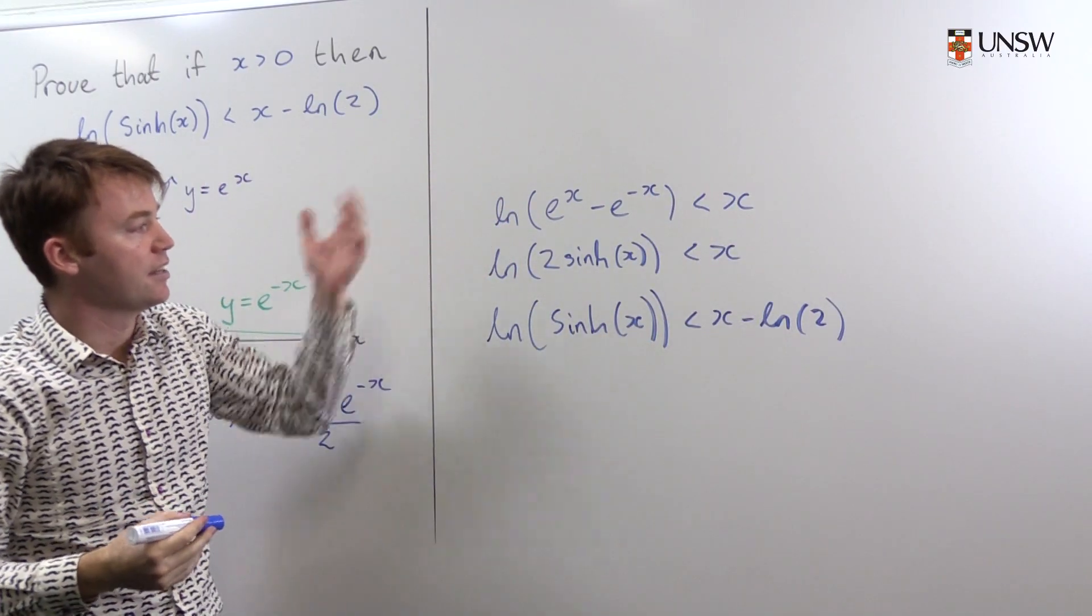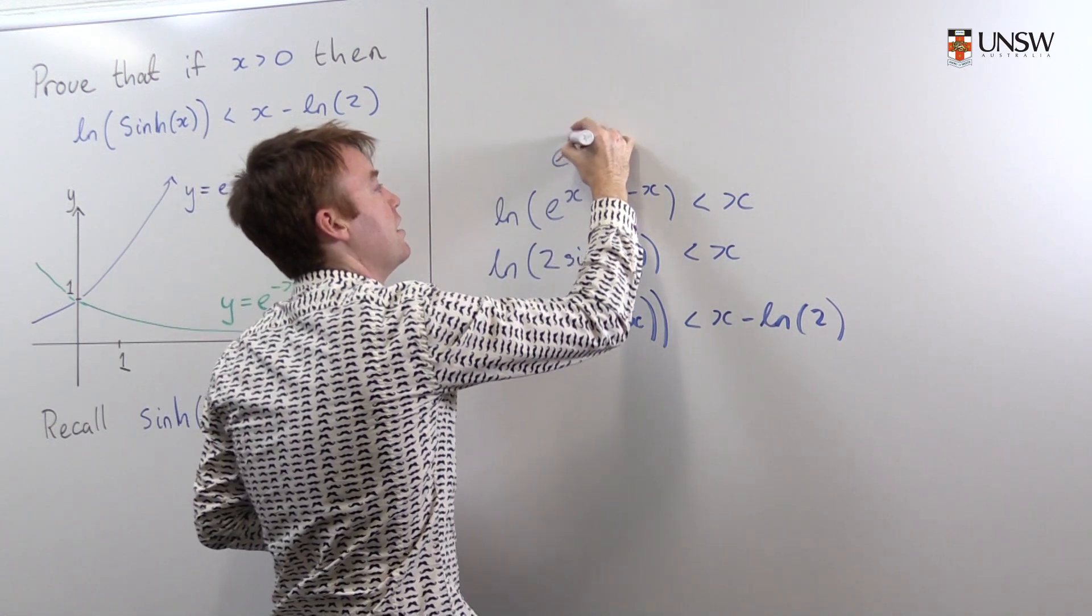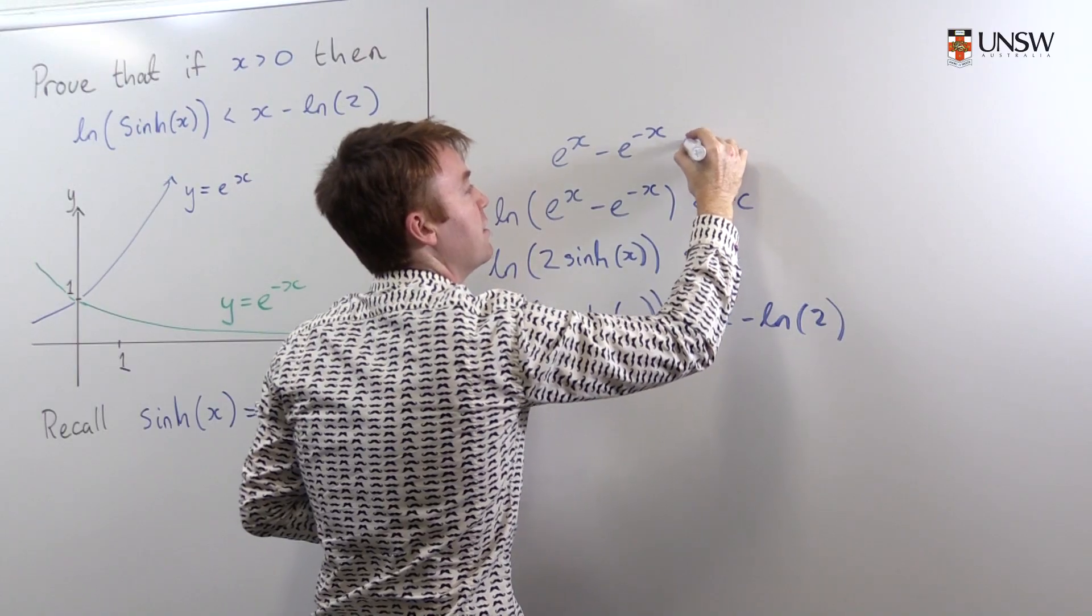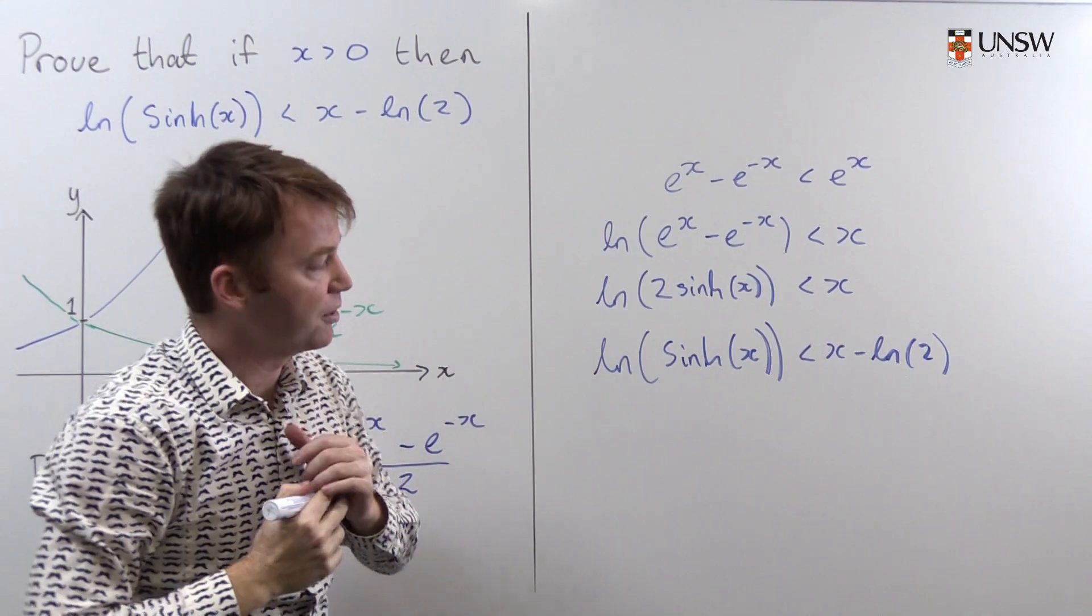Excellent. Now I can take exponentials of both sides and say that e to the x minus e to the negative x is less than e to the x. And now something interesting has happened.